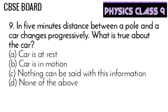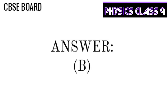Question 9: In five minutes, the distance between a pole and a car changes progressively. What is true about the car — car is at rest, car is in motion, nothing can be said with this information, or none of the above? The answer is B — the car is in motion.